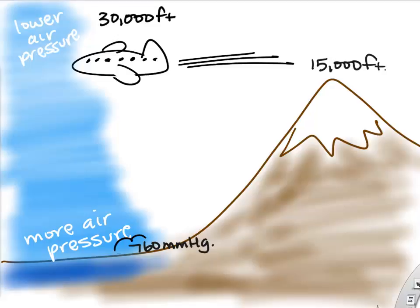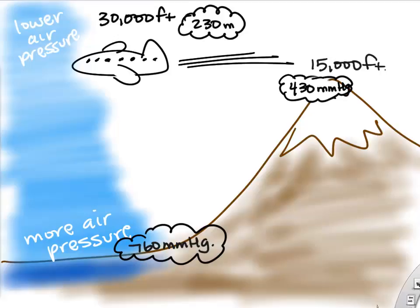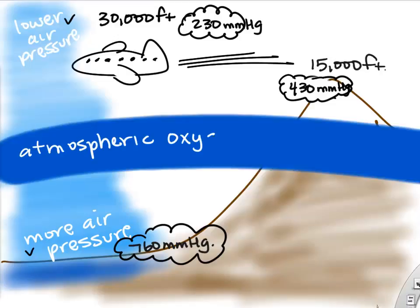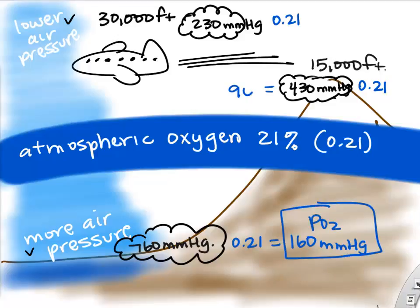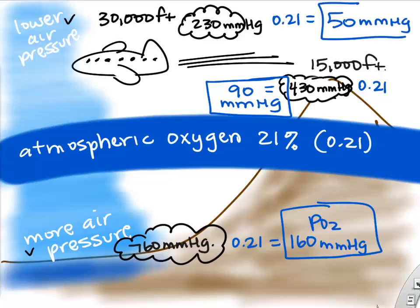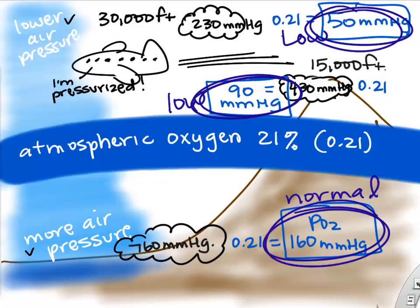If you go up high on a mountain top, say 15,000 feet, it's about 430 millimeters of mercury. At cruising altitude, the air outside your airplane at 30,000 feet is only 230 millimeters of mercury. The atmospheric oxygen percentage is always 21%, so if we multiply 0.21 by our atmospheric pressure we can calculate our PO2. At sea level it's 160, high on a mountain at 15,000 feet it's only 90, and at cruising altitude it's only 50 millimeters of mercury. Luckily, your air cabin is pressurized to simulate a lower altitude. So PO2 is reduced at higher altitude, meaning there's less oxygen for you to breathe.